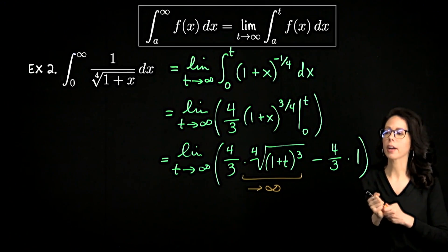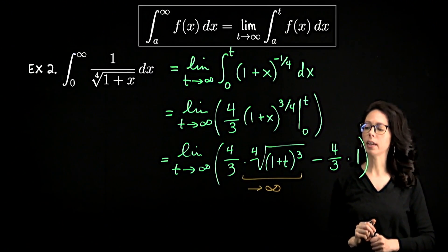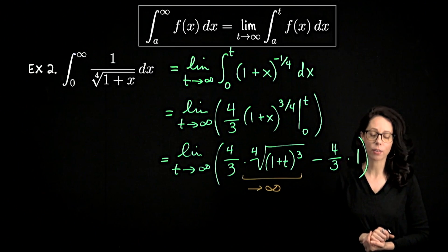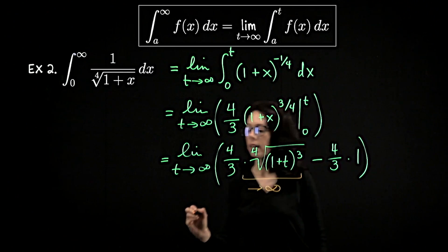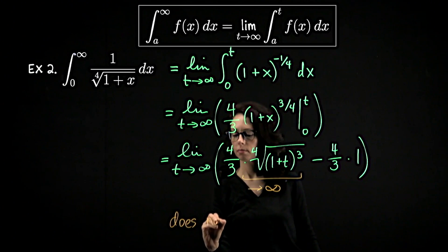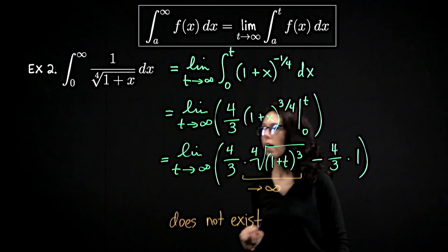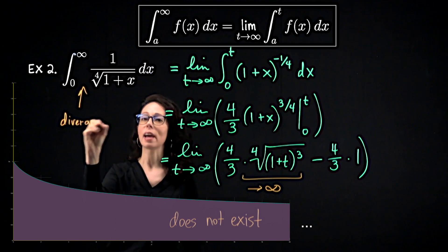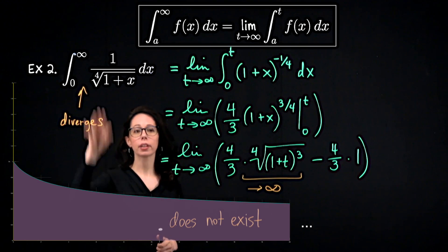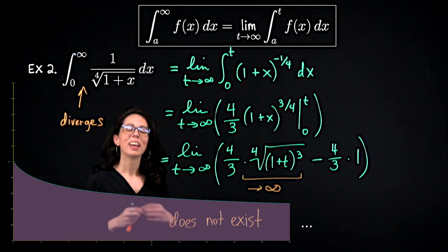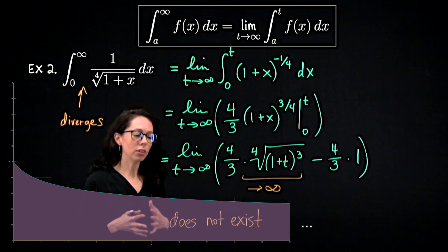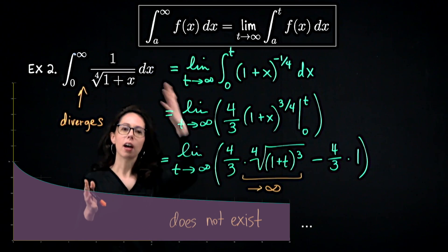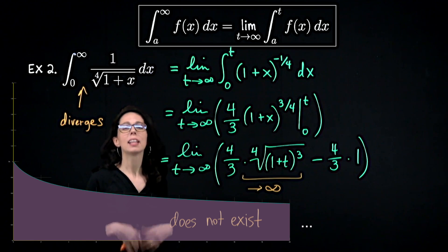The limit of this expression as t goes to infinity does not exist as a real number — a limit only exists when it equals a finite real number. So this improper integral diverges. That means that if you look at the graph of this function from 0 to infinity, as we travel left to right along the x-axis, this function is not enclosing a finite amount of area — the area under this function from 0 to infinity is infinite.